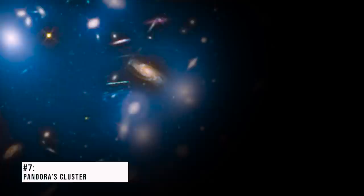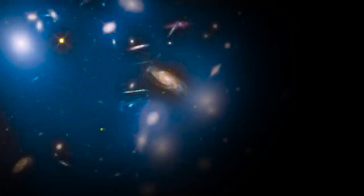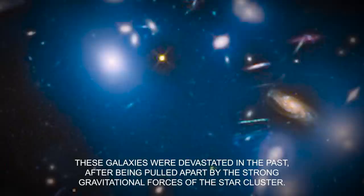Number 7. Pandora's Cluster. This picture depicts ghostly light coming from the already dead galaxies in the huge cluster of galaxies named ABEL 2744, or Pandora's Cluster. These galaxies were devastated in the past after being pulled apart by the strong gravitational forces of the star cluster.